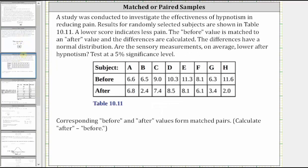A study was conducted to investigate the effectiveness of hypnotism in reducing pain. Results for randomly selected subjects are shown in table 10.11 below. A lower score indicates less pain. The before value is matched to an after value and the differences are calculated. The differences have a normal distribution.